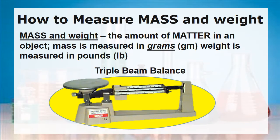How to measure mass and weight. Mass and weight are the amount of matter in an object. Mass is measured in grams, weight is measured in pounds. Here we see a triple beam balance we can use to measure matter.